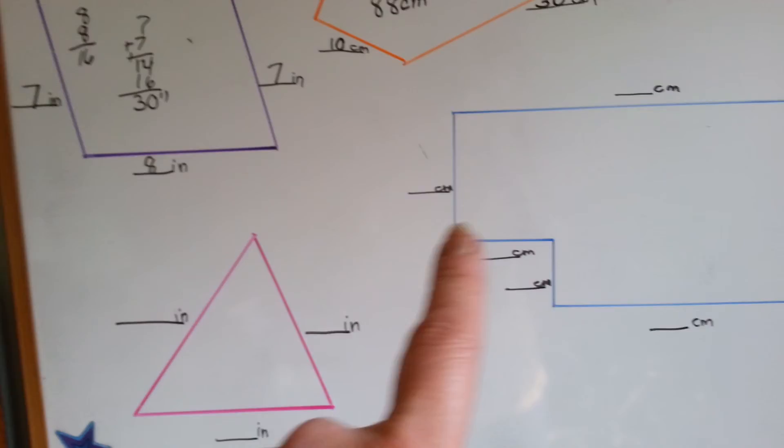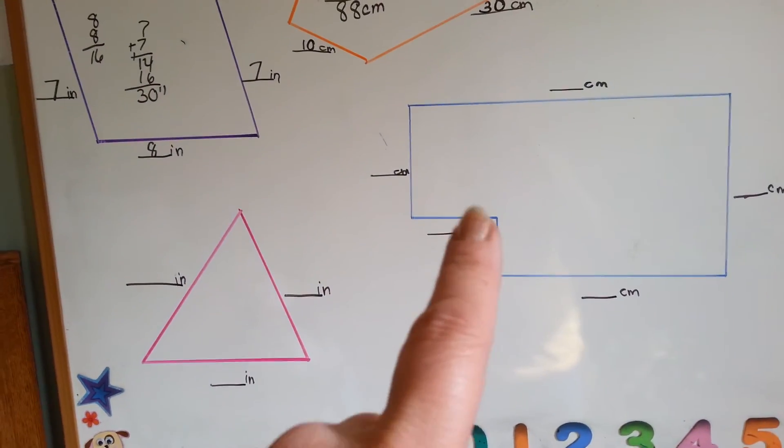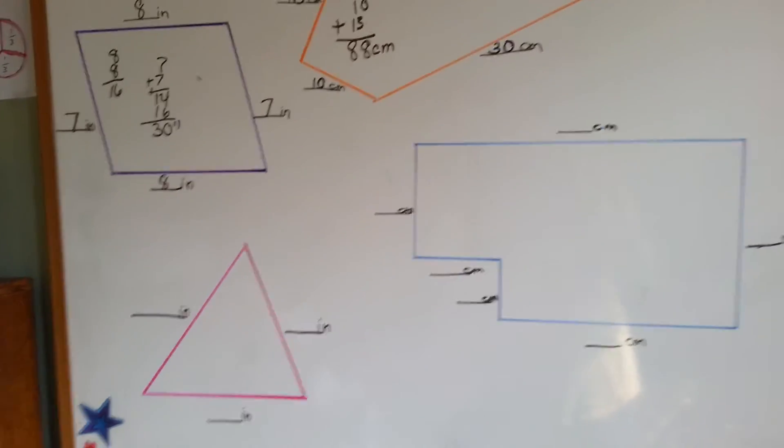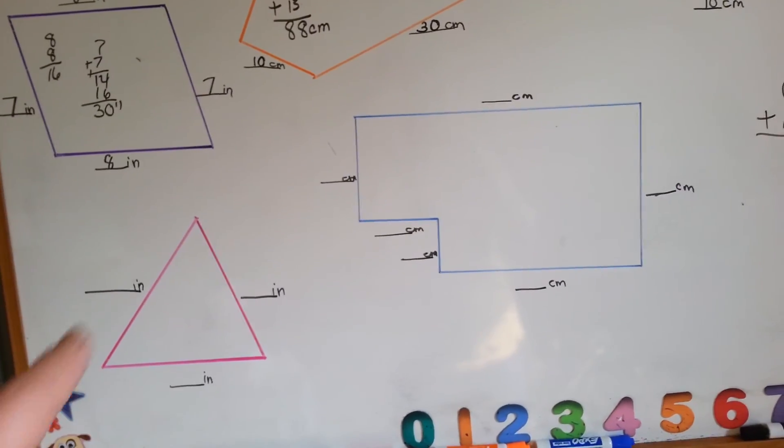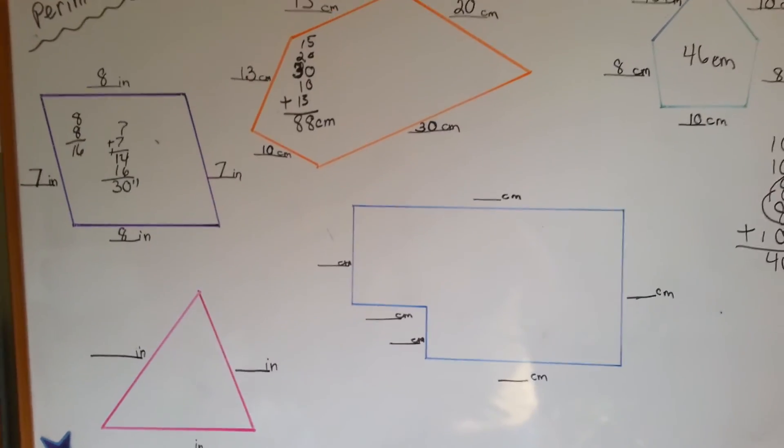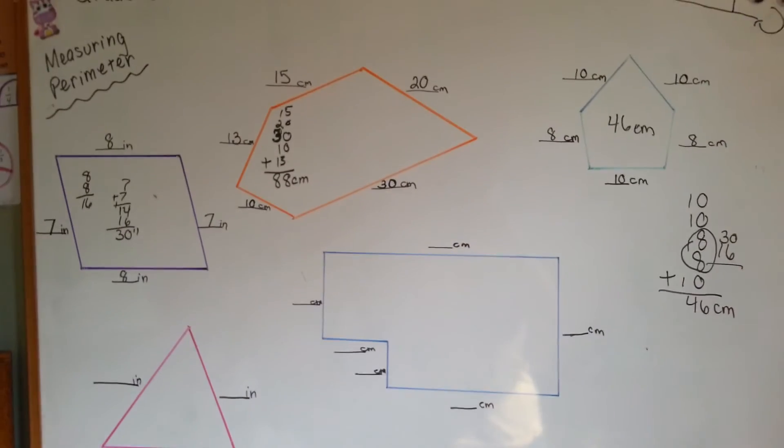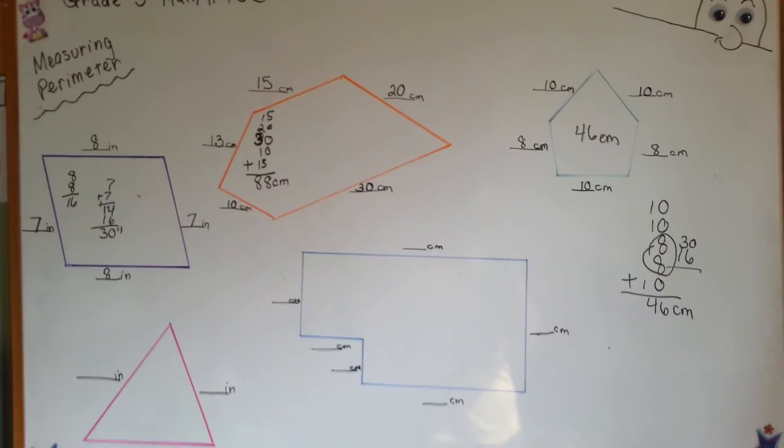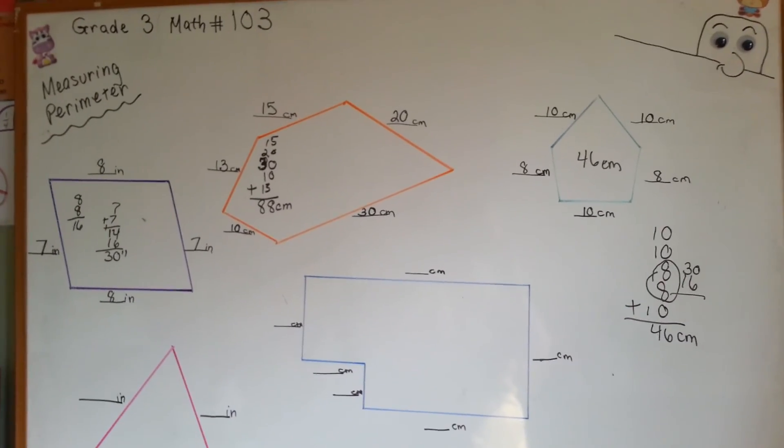So again, make sure you know if you're supposed to be doing it in centimeters or inches, and then measure the distance all the way around on all the sides, and you will get the total measurement of the perimeter. Isn't that easy? It was. That was very easy.